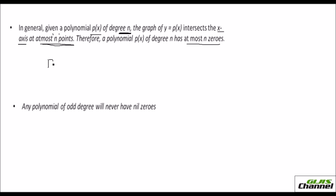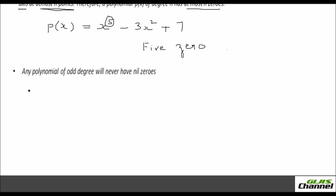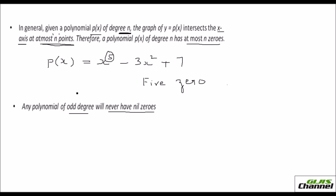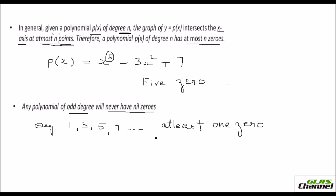Depending upon the polynomial, say for instance if you have X raised to 5 minus 3X squared plus 7, the highest power is 5, so this polynomial will have at most 5 zeros. Also, any polynomial of odd degree will never have nil zeros. For odd degrees like 1, 3, 5, 7 — you will have at least 1 zero. You can have more than one zero, but at least 1 you will have. You cannot say there is no zero for an odd-degree polynomial.